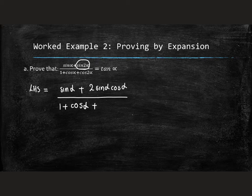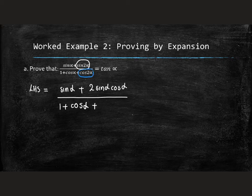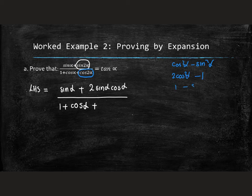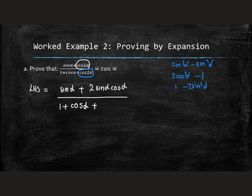And now we need to make a choice. And the choice we have to make is what does cos 2α have to become? We have three choices. We've got cos squared α minus sin squared α. We've got 2 cos squared α minus 1. And we've got 1 minus 2 sin squared α. So which choice are we going to make?